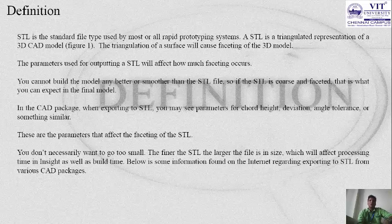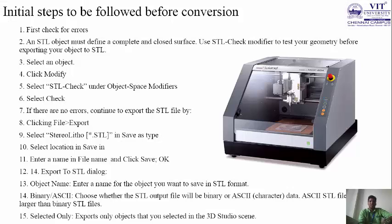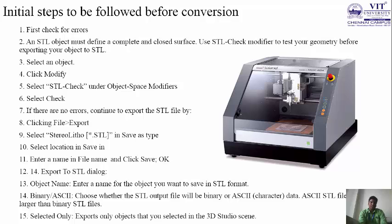I have mentioned 4 things on how to convert the file from CAD to STL. These are the initial steps to be followed before conversion. First, check whether there are errors in the machine before doing STL conversion. An STL object must define a complete and closed surface. Use the STL check modifier to test your geometry before exporting your object to STL: select an object, click Modify, select STL check under object space modifier, then select Check. If there are no errors, continue to export the STL file by clicking File > Export.